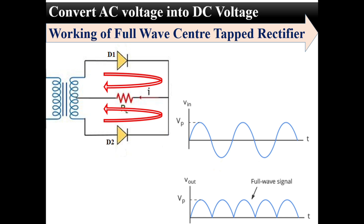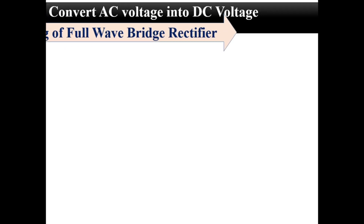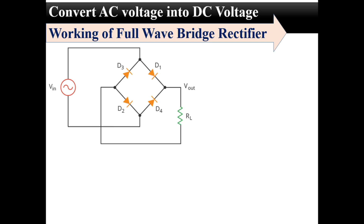Now let's see the working of the full wave bridge rectifier. This is the circuit diagram of the full wave bridge rectifier. This rectifier consists of 4 diodes and their connections are as shown in this figure. For the positive half cycle, the polarity of supply will be as shown. For this polarity, diodes D1 and D2 are forward biased and diodes D3 and D4 will be reverse biased. So D3 and D4 act as open circuits and D1 and D2 act as closed circuits. Current will flow through diode D1, then load resistance RL, and diode D2, and the output across the load resistance will be as shown in this waveform.